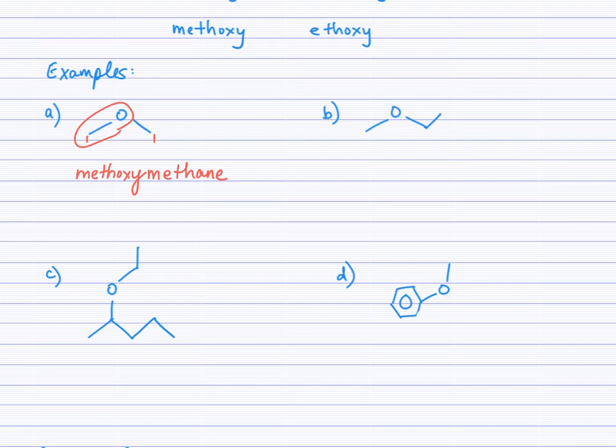Looking at example B, I have one carbon moving away from the oxygen, and on the other side, one, two. And so the two carbons are the longer R group, and so monkeys E, E stands for eth. I have ethane. What is attached to the ethane? Methoxy, a one carbon alkoxy group.